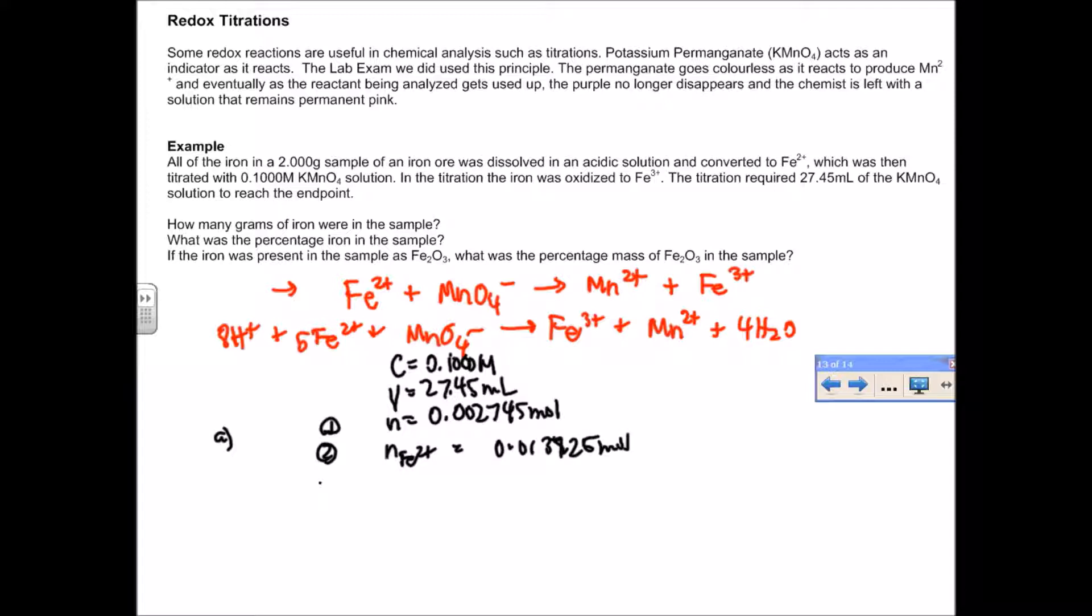That's 0.013725. Then we can find the mass of the iron from that. For every one mole of Fe²⁺, that came from one mole of Fe, so there's a one-to-one ratio. The moles of iron in the original sample are the same as the moles of iron 2 plus in the original sample. That would give us a mass of iron of 0.7665.